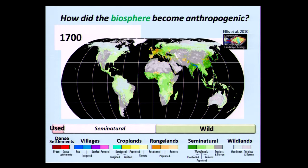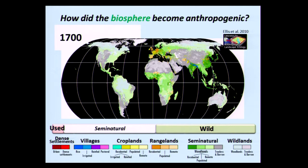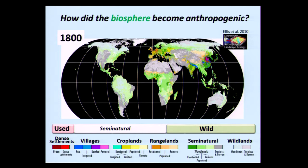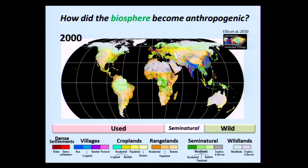Ellis put together a time series of maps showing wild lands, semi-natural lands, and used lands beginning in 1700. The used lands include croplands, villages, rangelands, settlements, semi-natural woodlands, and wild lands. Novel ecosystems are the bits of leftover land embedded in this matrix. By 1800 wild lands had shrunk and semi-natural was growing. By 1900 wilds had shrunk even more and used lands were really starting to increase. By 2000, wild lands are down to maybe 10–15%, and the rest is used and semi-natural.